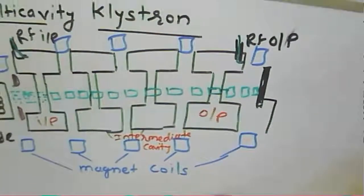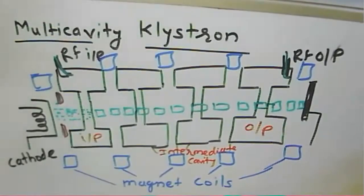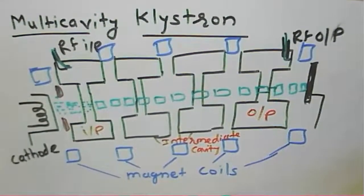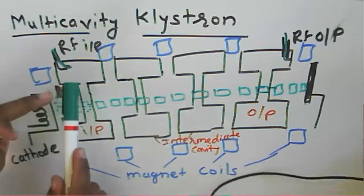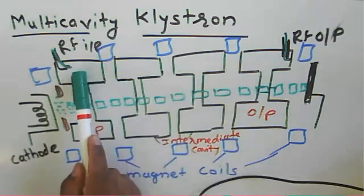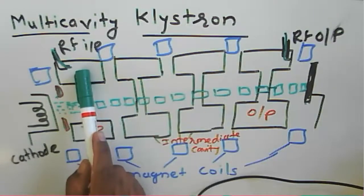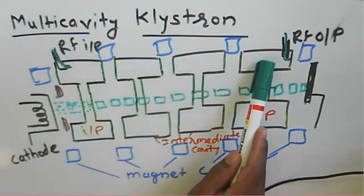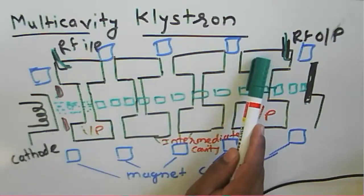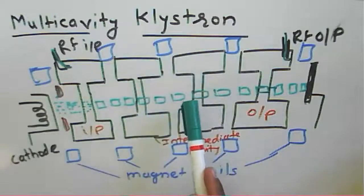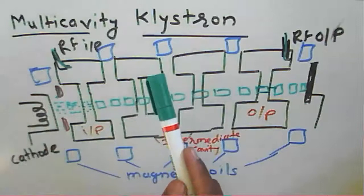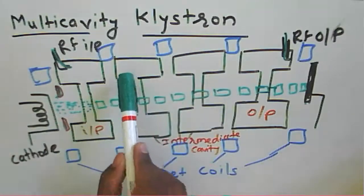Welcome to the microwave communication course. Today we start a new topic about the multi-cavity klystron. A multi-cavity klystron has multiple cavities. Earlier, a two-cavity klystron had mainly two cavities: one input cavity and one output cavity. In a multi-cavity klystron, along with the input and output cavities, multiple cavities can be added in the interaction region.